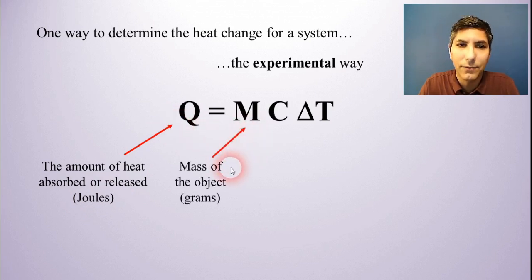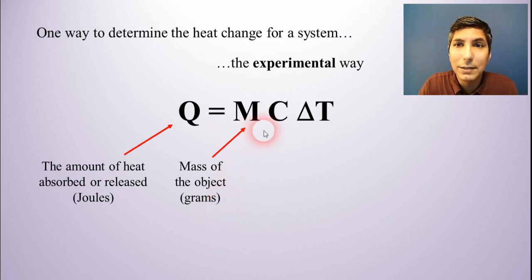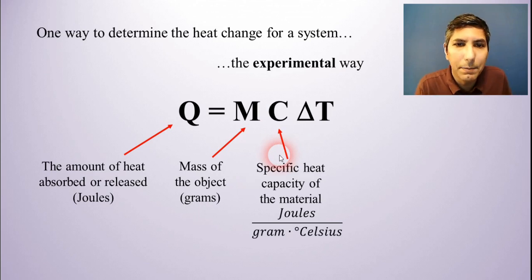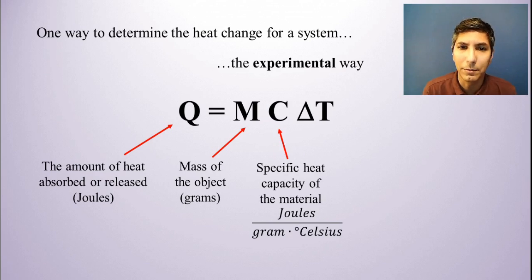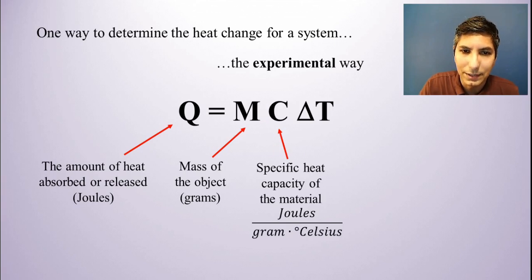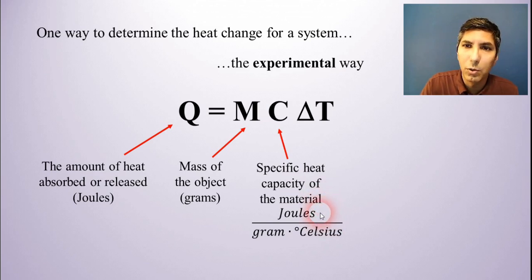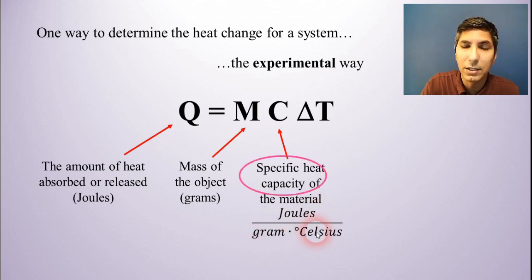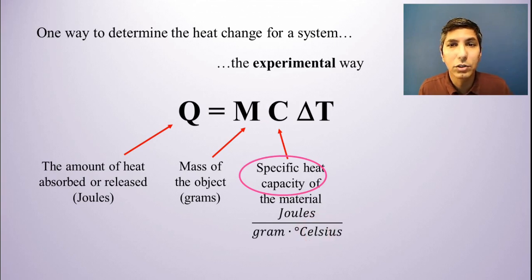M represents the mass of the object, and that's just going to be in grams, so that will probably be given to you in the problem. C represents the specific heat capacity of the material. This is a constant, and it's a constant that's different for every material. The specific heat capacity is normally given to us in joules per gram degree Celsius. Sometimes it's just shortened and called specific heat — that's the same thing.